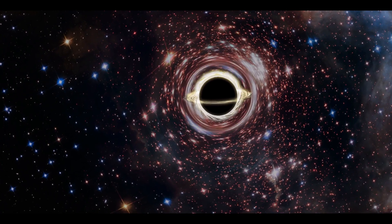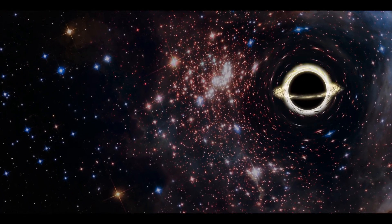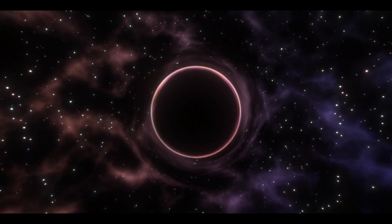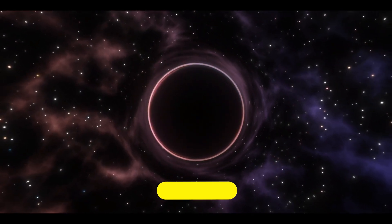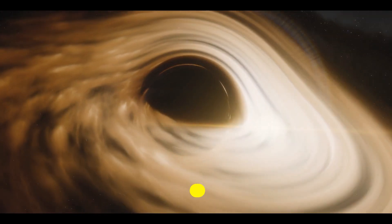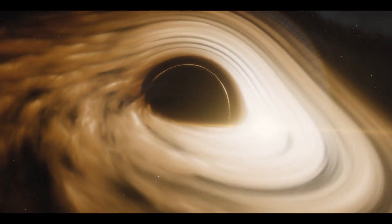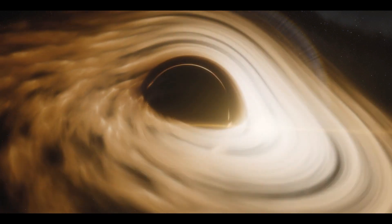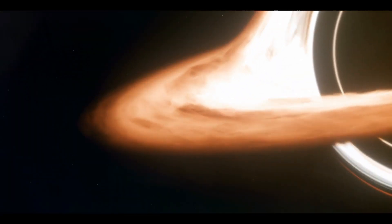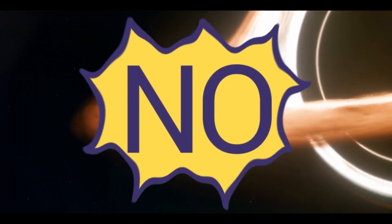One nearby star that could form a black hole in principle is Betelgeuse, the second brightest star in the constellation Orion. According to Zrake, Betelgeuse is nearing the end of its life and will likely produce a supernova sometime in the next 10,000 years or so. But this star lies around 500 light years away. And if it does produce a black hole, there would be no impact on Earth.